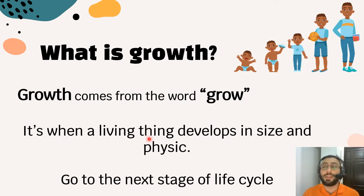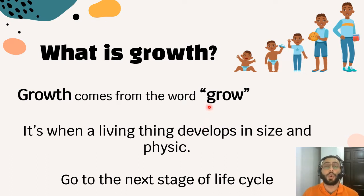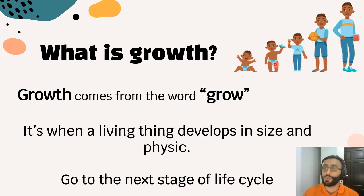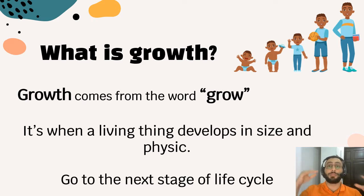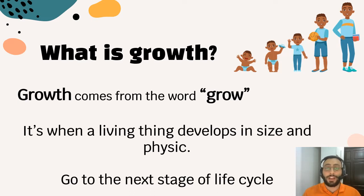Growth is when a living thing develops in size and physique — like you become bigger or more mature. You go to the next stage of the life cycle. For example, this baby grows into a bigger baby, and that baby grows into a kid. That is called growth. We are all growing, and maybe in ten years you will become taller, start to have a mustache, longer hair, hair on your arm.